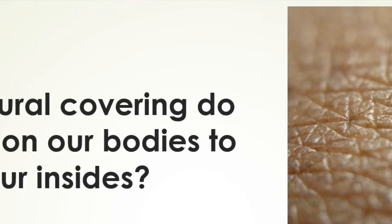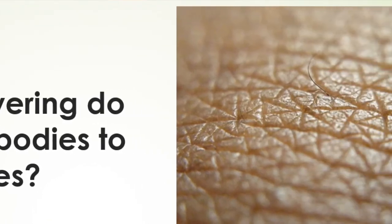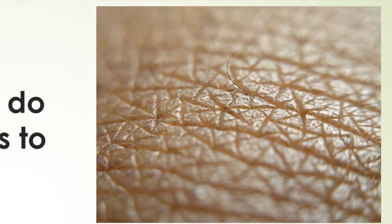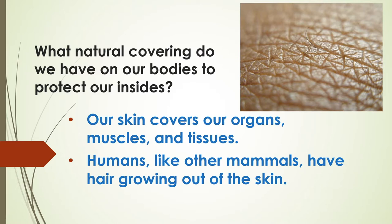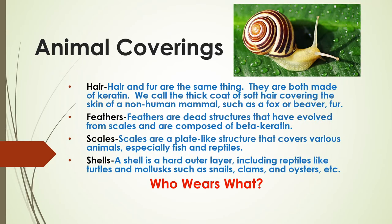What natural covering do we have on our bodies to protect our insides? Our skin covers our organs, muscles, and tissues. Humans, like other mammals, have hair growing out of their skin. Now let's get into animal coverings. Hair and fur are the same thing — they are both made of keratin.